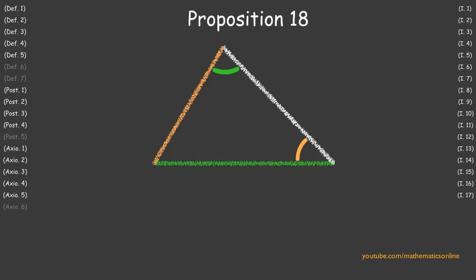In Proposition 18, we proved that if one side of a triangle is larger than another side, then the angle opposite the larger side is always greater than the angle opposite the smaller side.